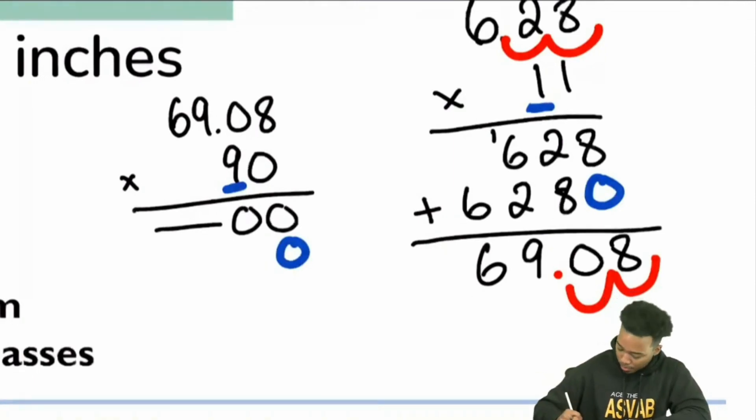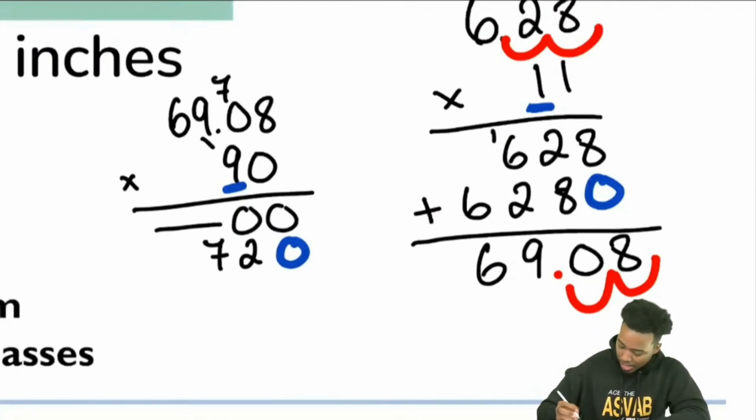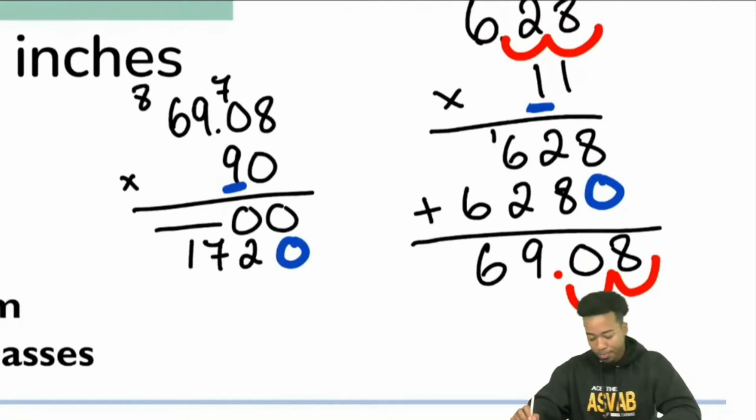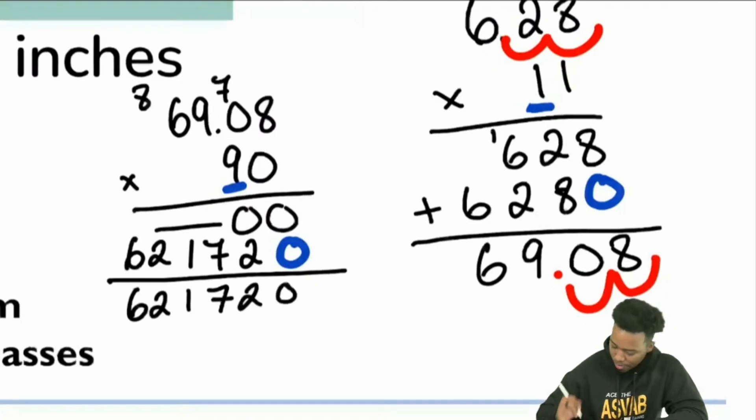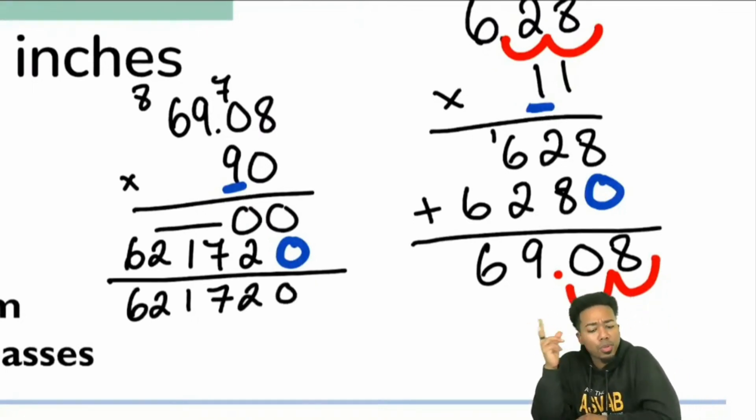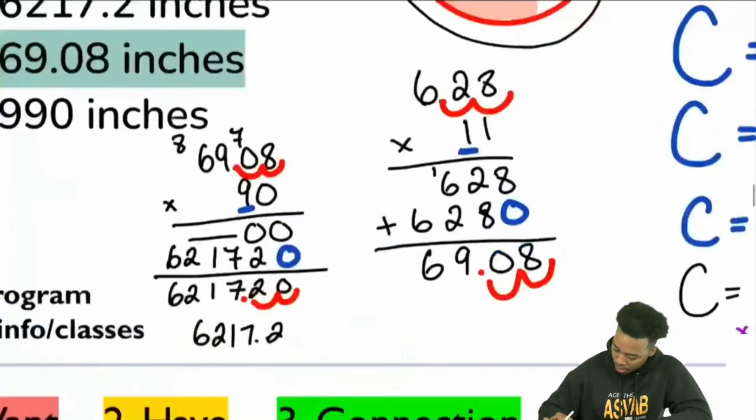And here we go. Eight times nine, that's 72. Zero times nine is zero. Carry the seven is seven. Nine times nine is 81. Carry the eight. Six times nine is 54. Carry the eight is 62. 62. And so there we are. We add this back and we get the same thing because all we had was zeros above. What do we do at the end, everybody? What do we do at the end? Same thing as always. What do we do with those decimals? All right. We bring them back. We bring them back nice and easy. We go one, two, one, two. So now we have 6,217.2 inches.